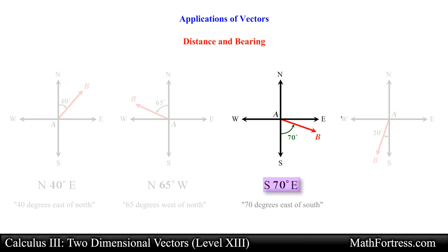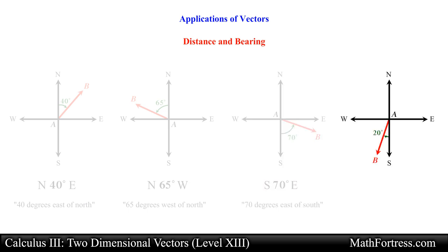The third bearing would be pronounced as 70 degrees east of south. And finally the last bearing would be pronounced as 20 degrees west of south.